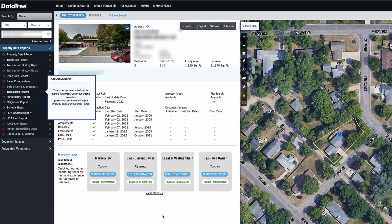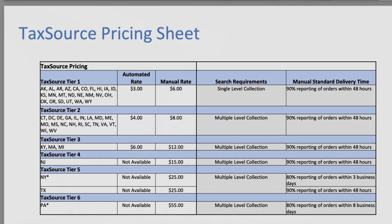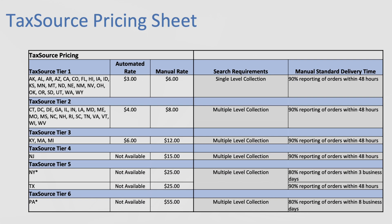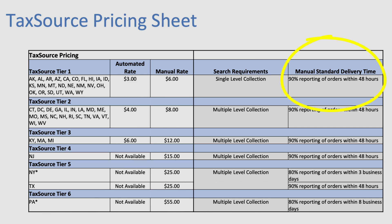I was waiting here for about 60 seconds, and then this popped up and said your order has been submitted for manual fulfillment. Once your order is complete, you may access it on the subject property page or in the order portal. Going back to the pricing sheet, because this is in Minnesota, and this is a manual pull, what I just did there is costing me $6 to get this. It usually takes about 24 to 48 hours for that order to be fulfilled — so not quite as fast or cheap, but still pretty convenient.